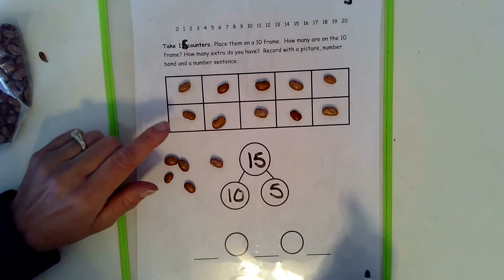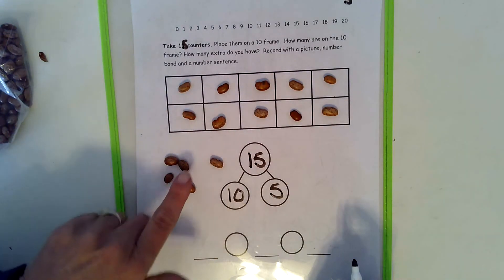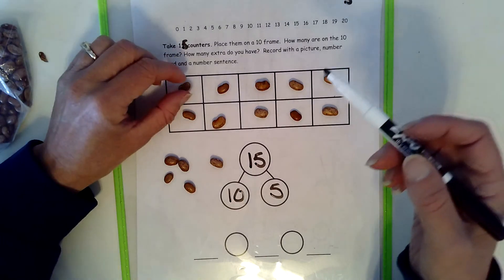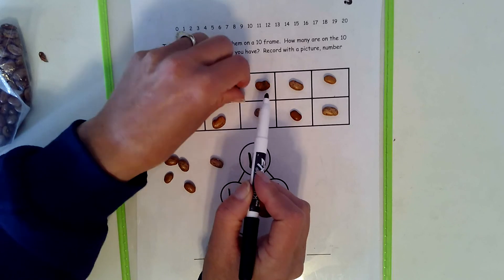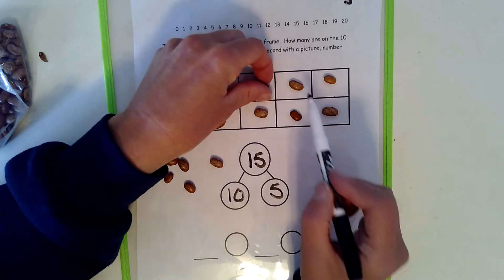Now the other thing you need to make sure you do is that you record your picture. I think Mrs. Stalker forgot to show you that yesterday. So make sure that you draw your 15 before you put your counters away.